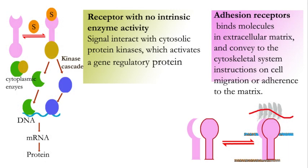Receptor with no intrinsic enzyme activity: here the receptor doesn't have an intrinsic enzyme activity, but the receptor attracts and activates cytosolic protein kinases. These cytosolic protein kinases activate a gene regulatory protein. There are two pathways: in the first pathway, protein kinases directly activate the gene regulatory protein.